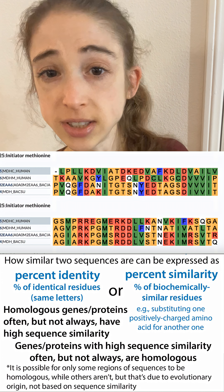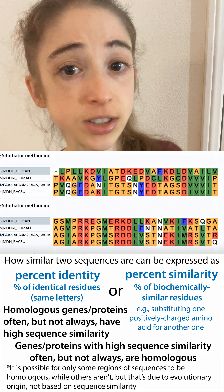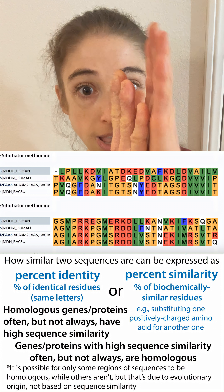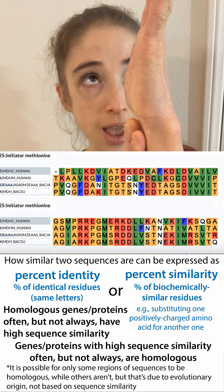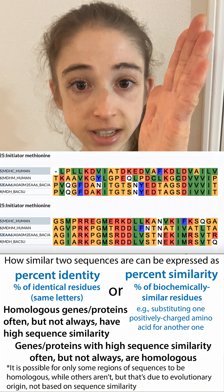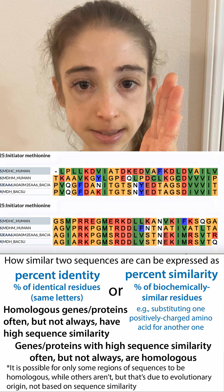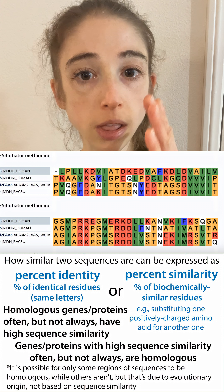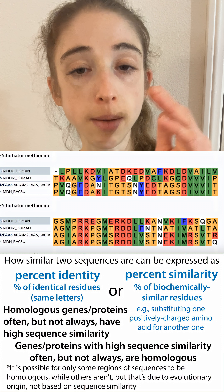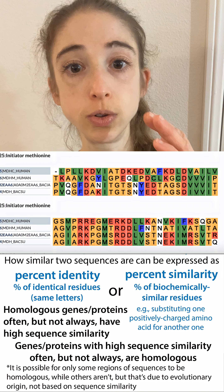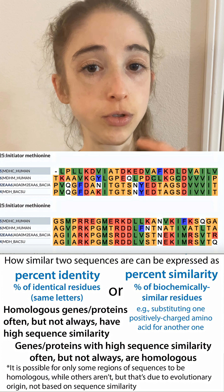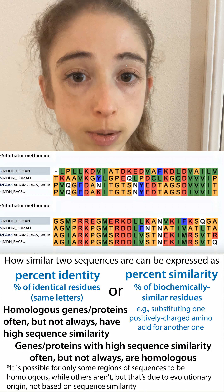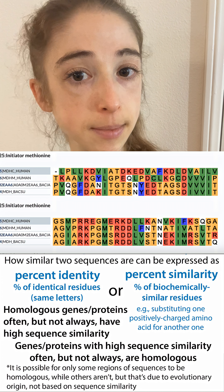There's also percent similarity, where you go one by one through the aligned amino acid residues and ask: are these biochemically similar? For example, are they both small and non-polar? Or are you going from a non-polar to a polar, or switching charges? That sort of thing all contributes to percent similarity.